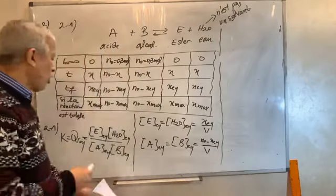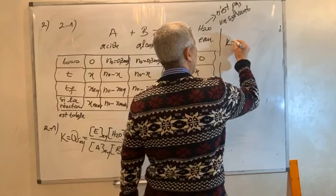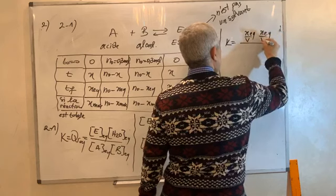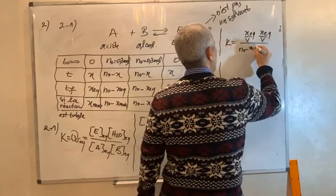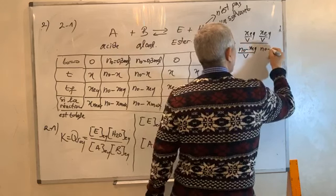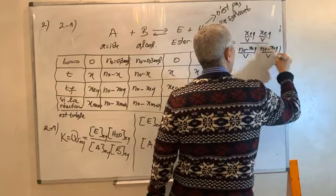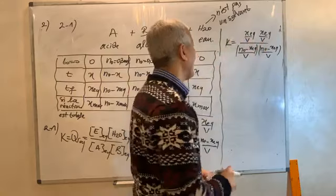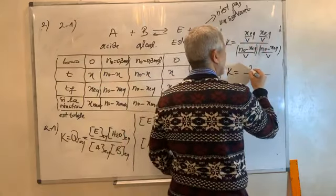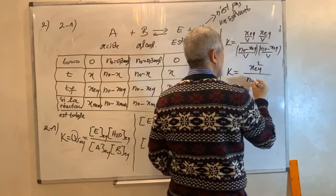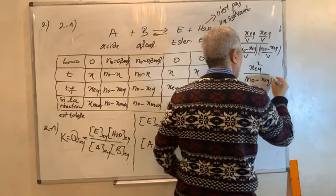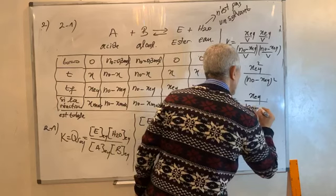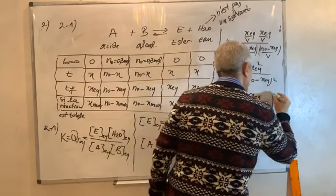Après simplification des V, K = x_éq² / (N₀ - x_éq)². Voilà l'expression de K.